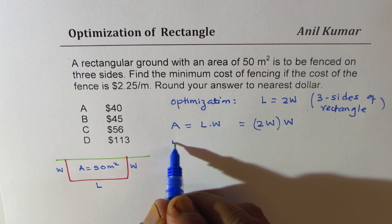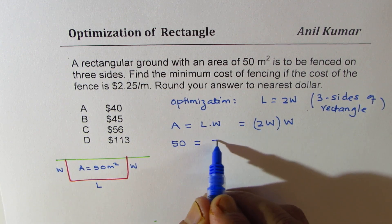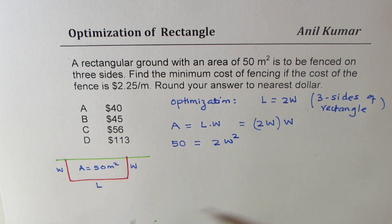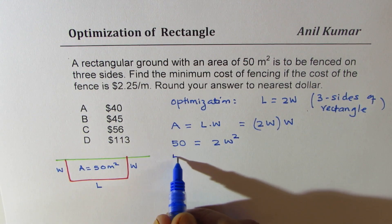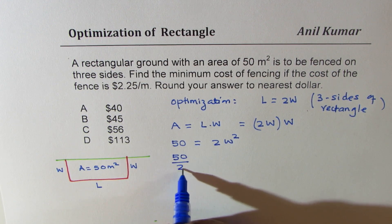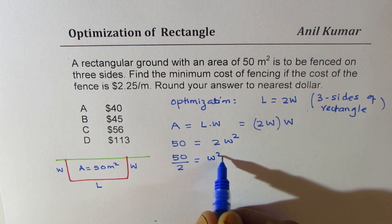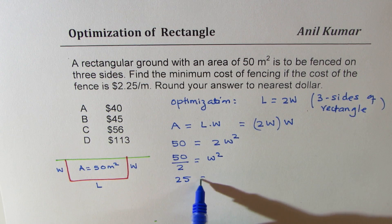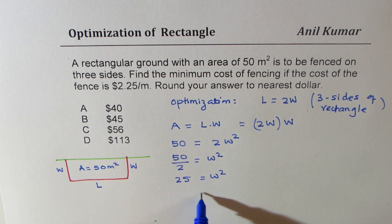Area is given to us is 50. And here we get two times width square. Now, you can simplify 50 divided by two is width square, which is 25 is square of the width.